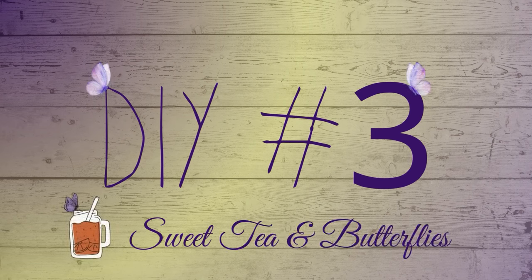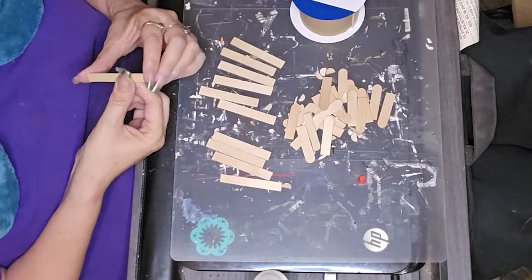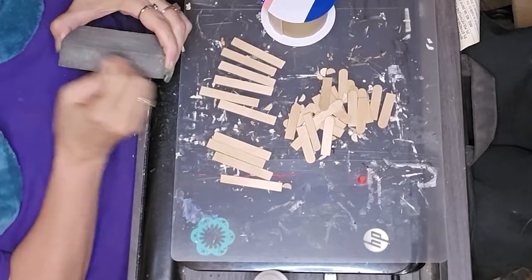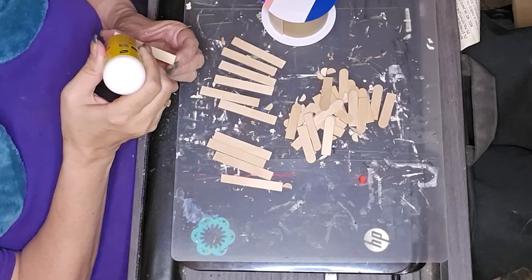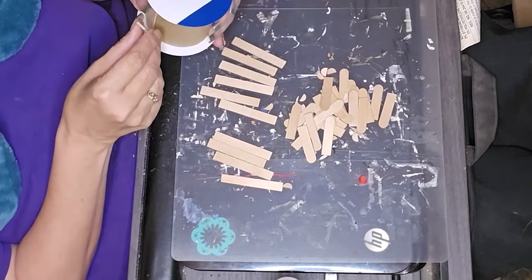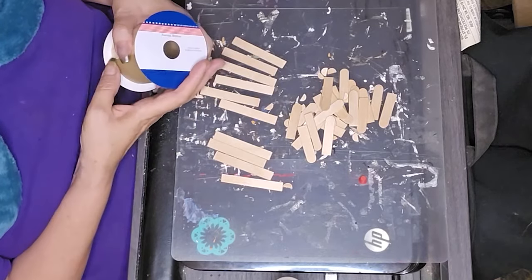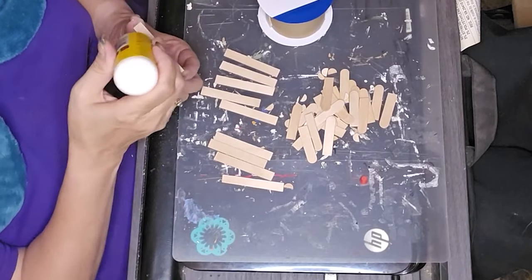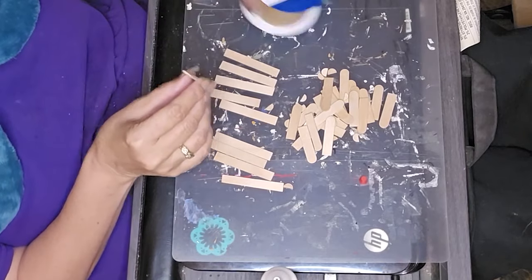Here we are onto DIY number three. This is where we used the ribbon spool. I don't know what happened to the first part of the footage. I took some popsicle sticks, and I wish I had been able to find a ribbon spool that had a narrower middle to it. I was just totally stumped on what to do with this, but I decided I was going to make kind of a spool riser for tiered trays.